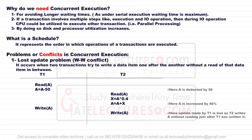We're going to discuss concurrent execution and concurrent programming as part of database management systems. First, we need to understand why we need concurrent execution. If there's one single data item, more than two people can work on it simultaneously. Because more than two people are working on the same data item simultaneously, you can increase the throughput of the system — meaning more jobs can be completed per unit time.